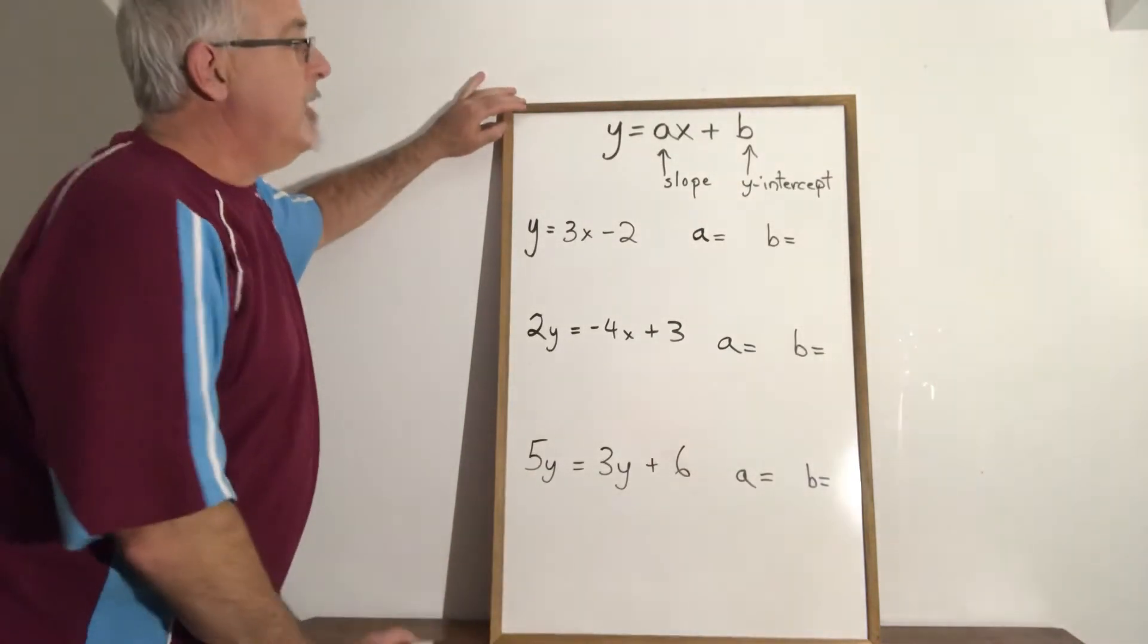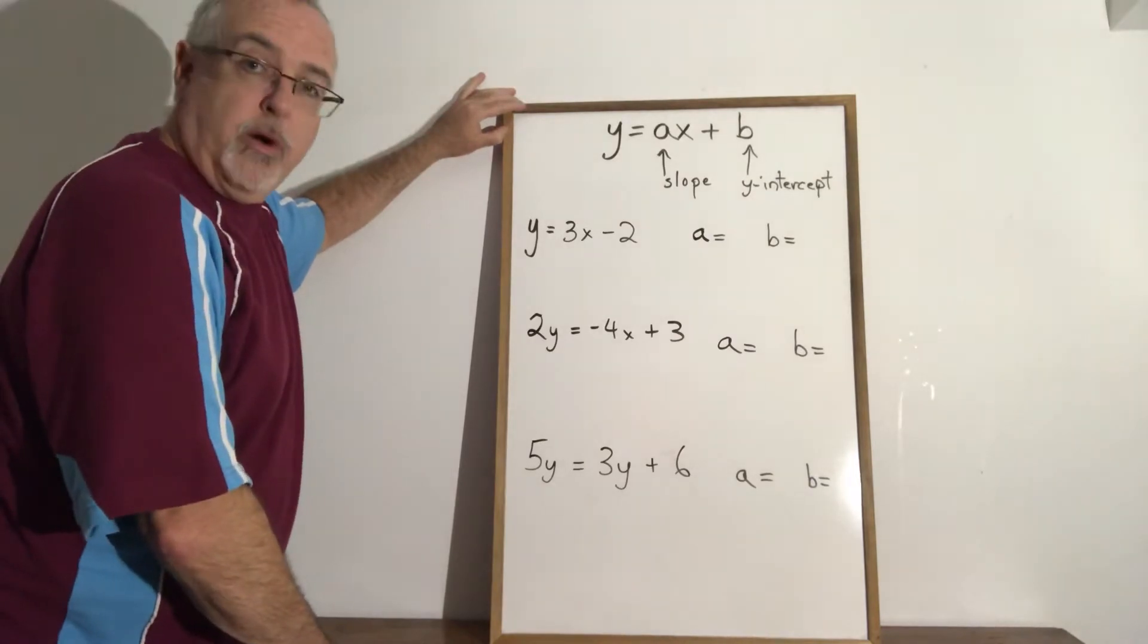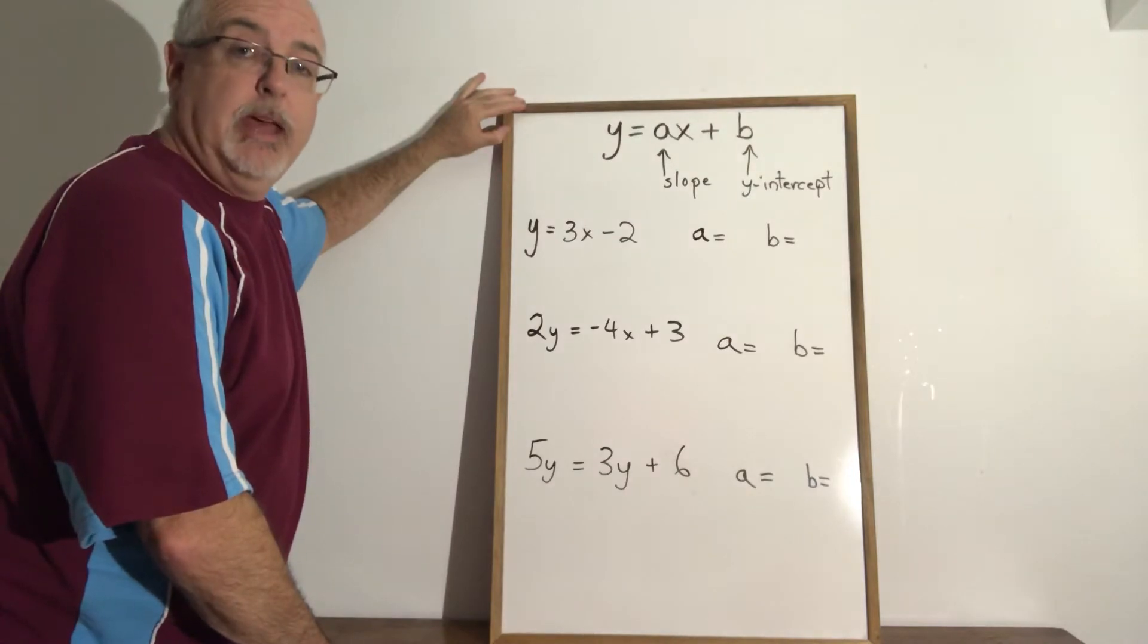Today's daily dose of math is using the y equals ax plus b form for the equation of a straight line to find the slope and the y-intercept of that line.